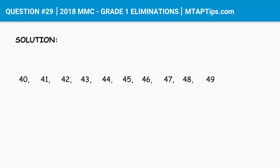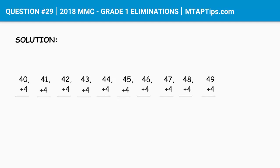The question says we have to add 4 to each of these numbers, so let's put plus 4 on each one. Now we need to get the sum of each one: 40 plus 4 gives 44, then 45, 46, 47, 48, 49, 50, 51, 52, and 53.